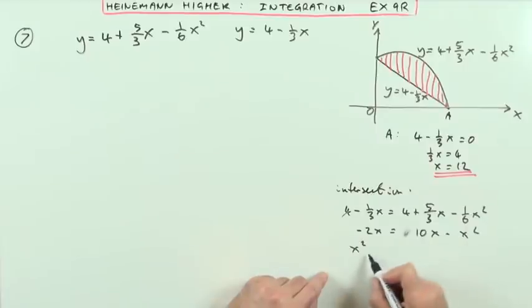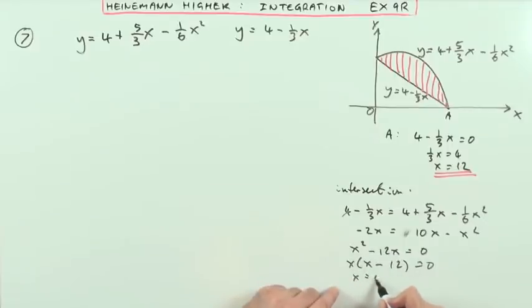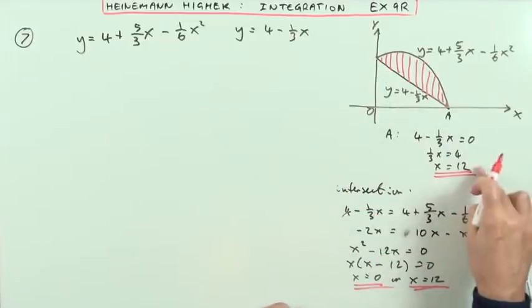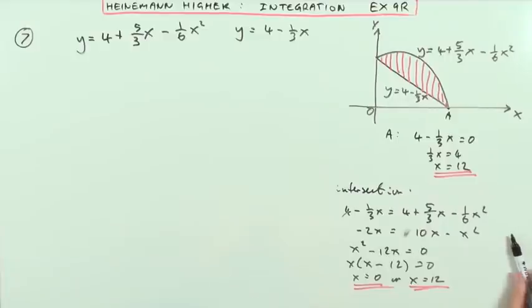x squared minus 12x equals zero. Factorizing x times x minus 12 equals zero. So x is zero or x is 12, as was the case in that diagram in the first place then. So that would have done. So the diagram was accurate.